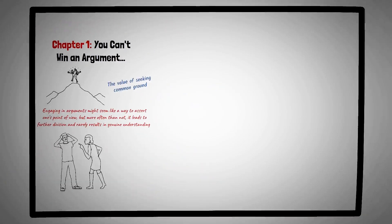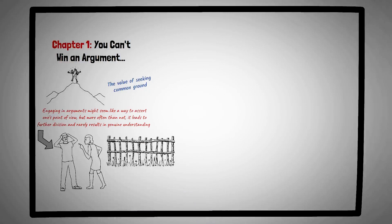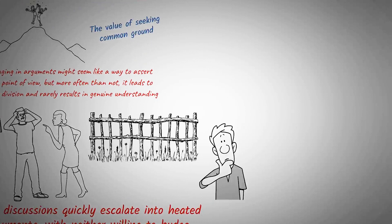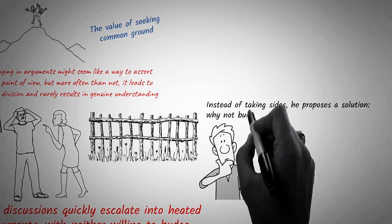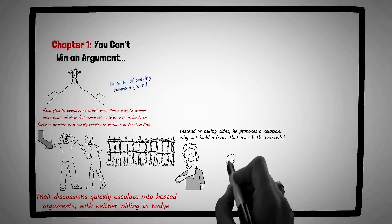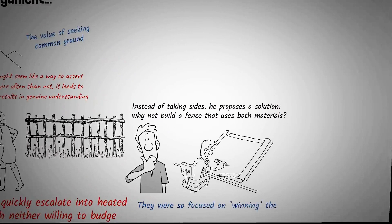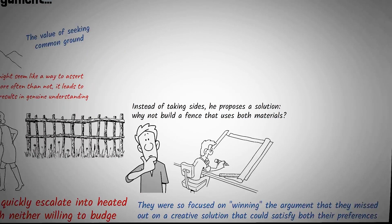Picture two neighbors, Clara and Raj. They share a fence that's seen better days and needs replacement. Clara believes a wooden fence would be best, citing its aesthetic appeal, while Raj is adamant about a metal one due to its durability. Their discussions quickly escalate into heated arguments, with neither willing to budge. One day, a mutual friend Diego visits and notices the tension. Instead of taking sides, he proposes a solution. Why not build a fence that uses both materials, combining the beauty of wood with the strength of metal? To visualize his idea, Diego sketches a design that impressively merges both elements. Seeing the potential, Clara and Raj realize they were so focused on winning the argument that they missed out on a creative solution that could satisfy both their preferences. With Diego's mediation, what started as a disagreement transformed into a collaborative project that both neighbors took pride in.